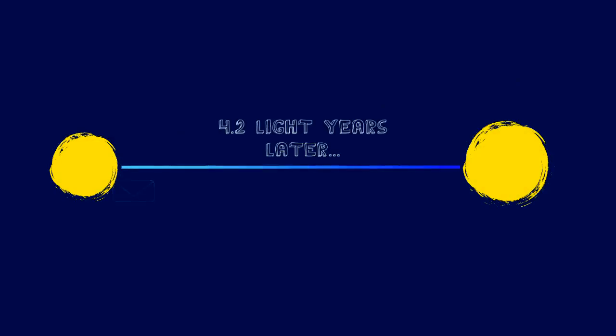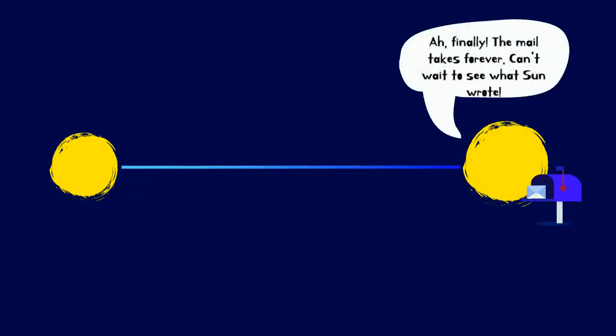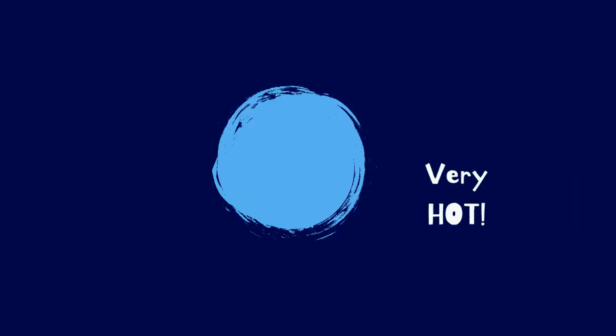Even though stars are very far away from each other, we know a lot about stars. We know their temperature because of their color. Blue means hot, yellow means warm, and red means cool.